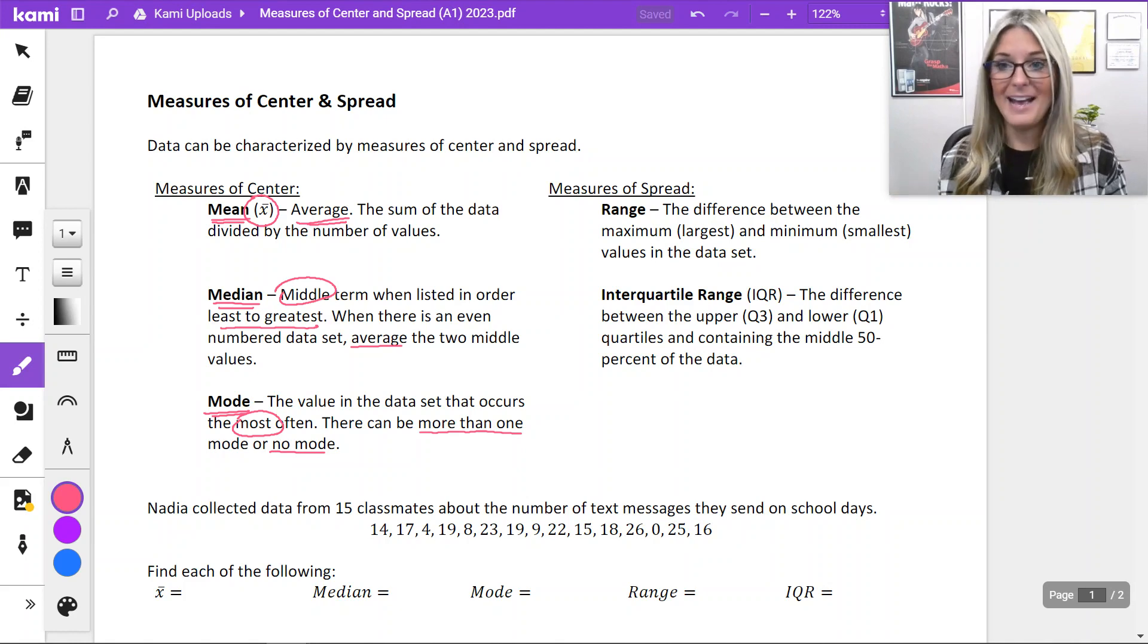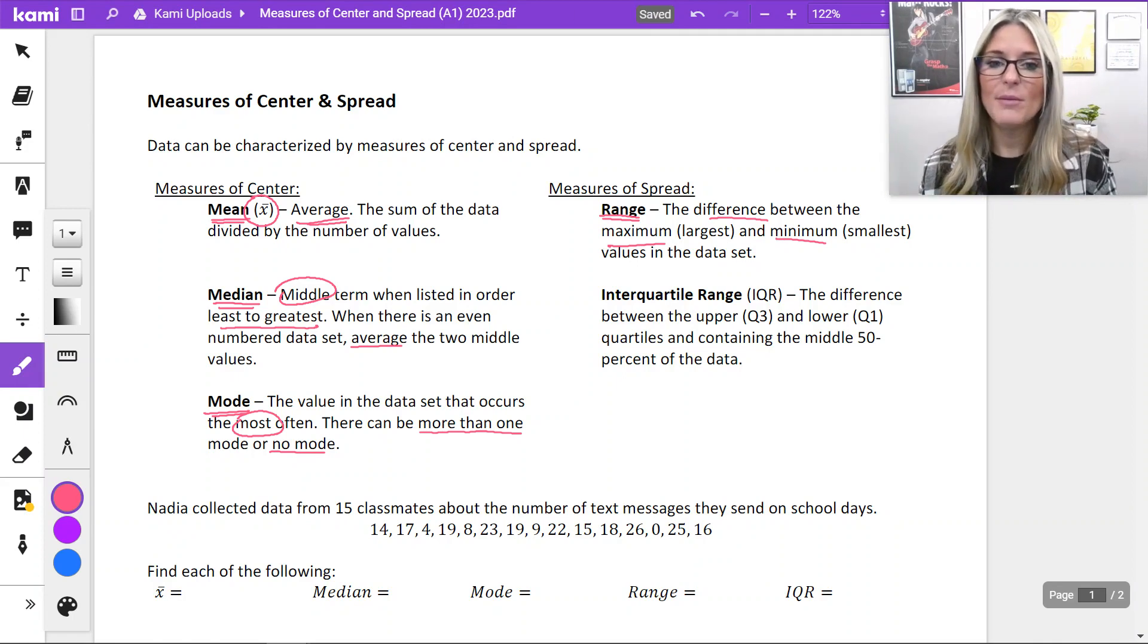Measures of spread, how vast our data is. So you are probably very familiar with range, and that would be the difference between the maximum and minimum. And then we also have interquartile range, or IQR. We'll see this come up when we review box plots or box and whisker plots. That's the difference or the range between that upper and lower quartile.